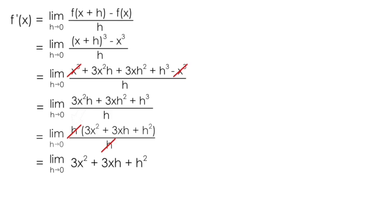Up until this point, I wasn't able to simply substitute in 0 for h, because doing so would result in 0 over 0. But having canceled the h in the denominator, I'm now able to evaluate my limit by substituting in 0. This results in any term with an h disappearing, leaving only 3x².